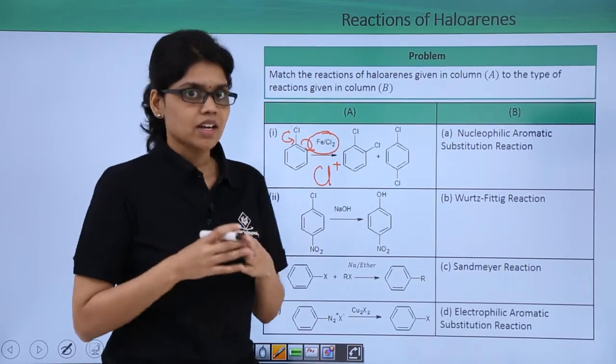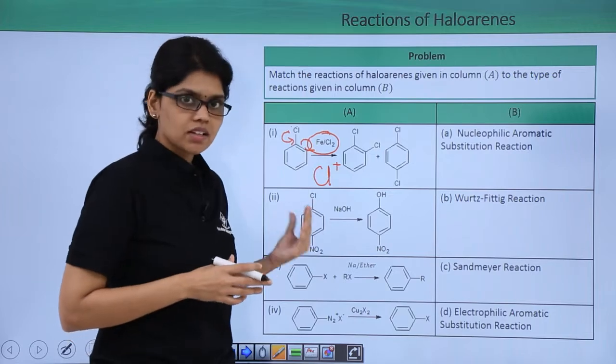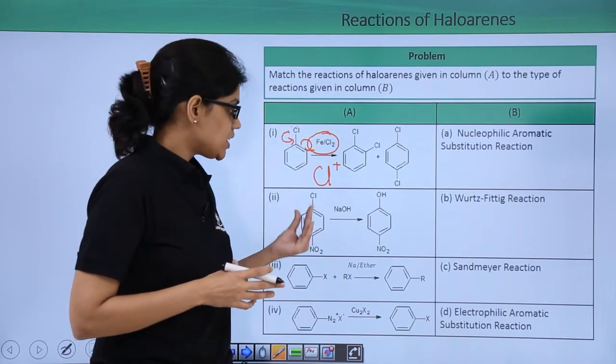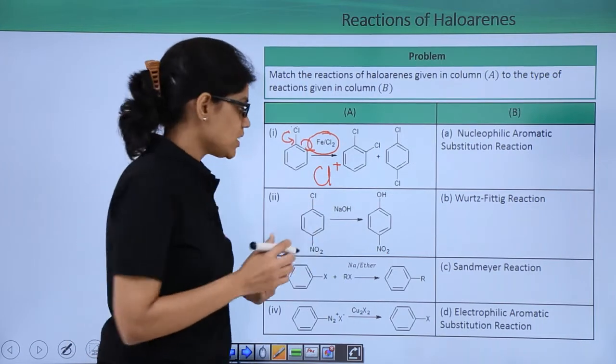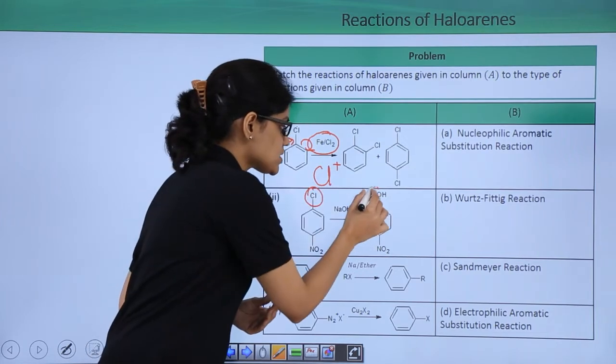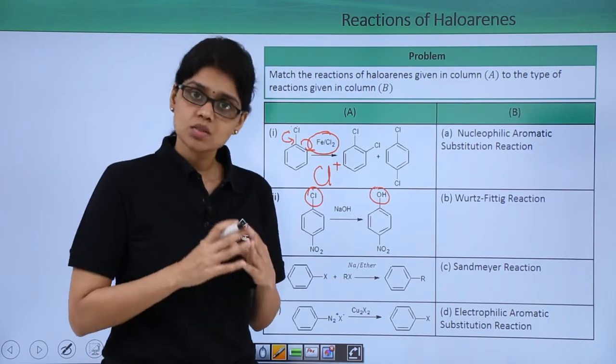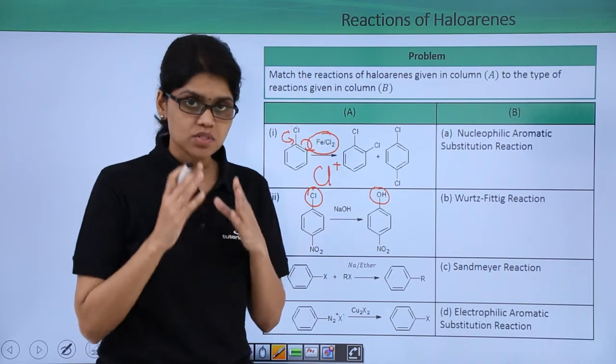Let us now look at the second reaction. Here we have the starting reagent and when it reacts with NaOH you can see that chlorine has been replaced by OH group. So this is again a nucleophilic substitution reaction.